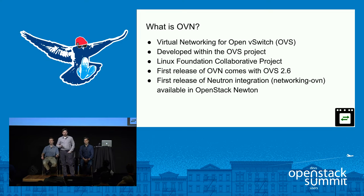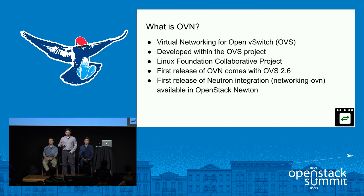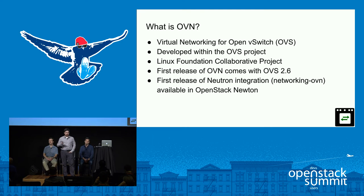So what is OVN? It's virtual networking for OpenVSwitch — it's part of the OpenVSwitch project, developed in the same repository as OVS itself. OVS moved to the Linux Foundation fairly recently, which was a very positive move. OVN has been going about a year and a half and has finally reached its first non-experimental release as part of OVS 2.6. We also did our first release of the Neutron plugin called Networking OVN as part of the OpenStack Newton release.